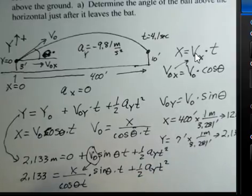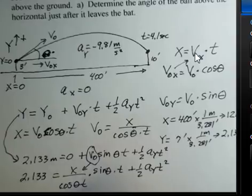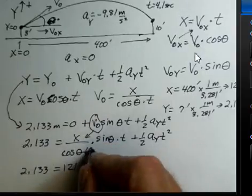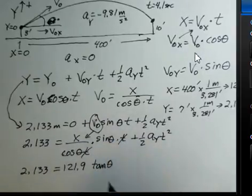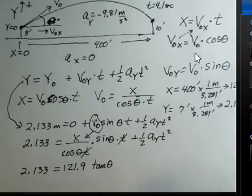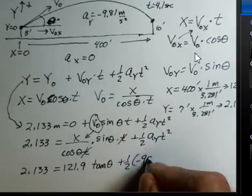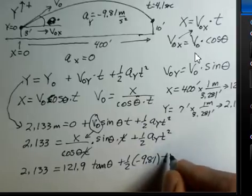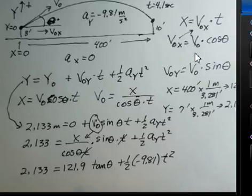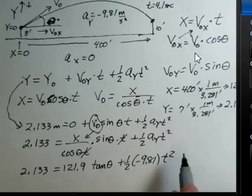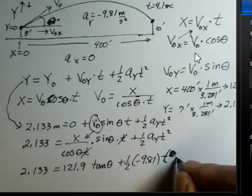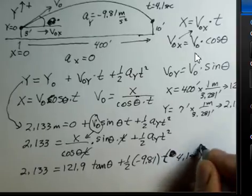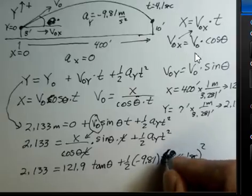Now some numbers. 2.133 equals our x is 121.9 meters. The sine theta divided by cosine theta, that's a tangent theta. And the t's cancel off. I've got a t multiplier in the numerator and a t multiplier in the denominator. And then we have one-half minus 9.81. And t squared, 4.1 seconds, and that has to be squared. So it's not good to have it as an unknown because my theta is an unknown. And we just have, I want to have one unknown and one equation at this point.